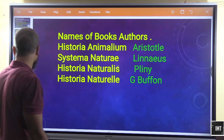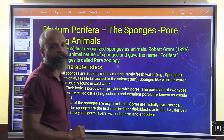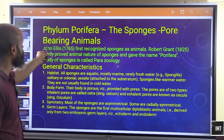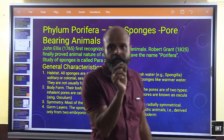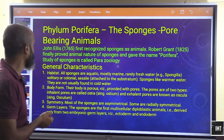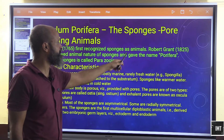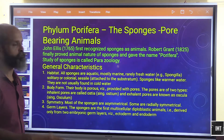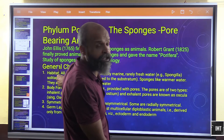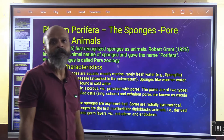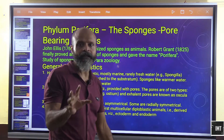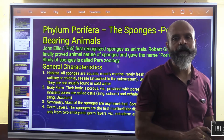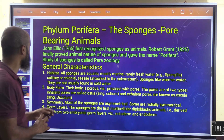Now we start with the Kingdom Porifera — the sponges, or pore-bearing animals, named so because they have pores on their bodies. John Ellis in 1765 first recognized sponges as animals. Robert Grant in 1825 finally proved the animal nature of sponges and gave them the name Porifera. The study of sponges is called Parazoology.